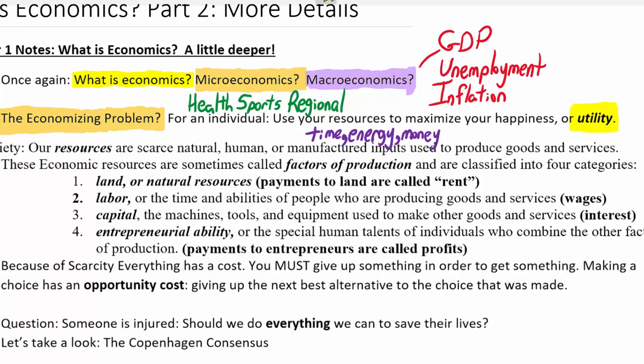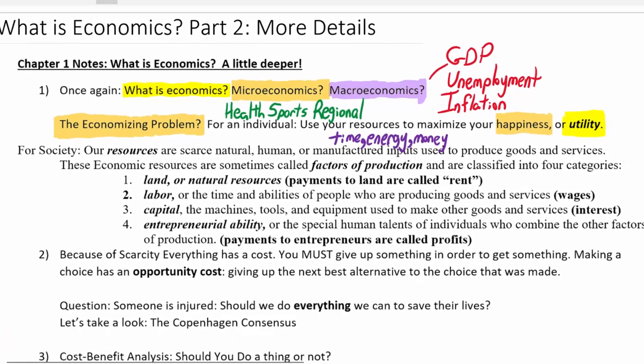The word utility comes from the 1800s, when it meant something more like usefulness — people want to buy things because they're useful and they help them. These days, instead of thinking about usefulness, we think of utility as just being your happiness or satisfaction, whatever that may be. You may want pleasure, or your satisfaction might come from learning or from helping other people. Everybody has different things that will make them happy, and we study how people can use their resources in the best way possible to maximize whatever their goals are.